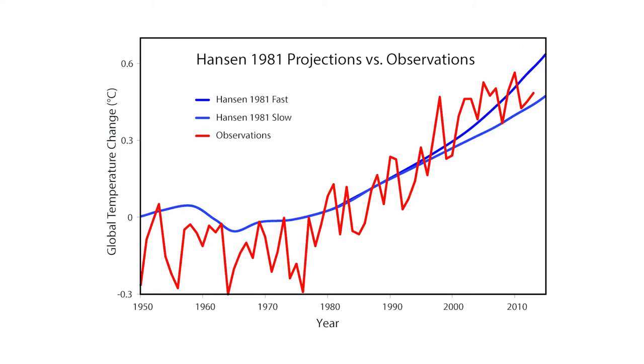In 1981, NASA climate scientist James Hansen had developed a somewhat more detailed model of the Earth's climate. He projected that between 1981 and 2015, the planet would warm about 0.5 degrees Celsius.